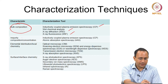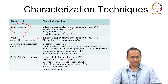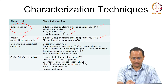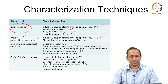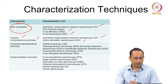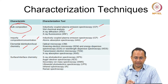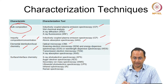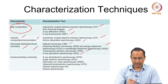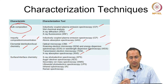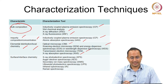Similarly, if you are interested in determining impurity composition and concentration, we can use ICP and atomic absorption spectroscopy. Elemental distribution and local chemistry can be determined using optical microscopy, scanning electron microscopy, transmission electron microscopy, and X-ray absorption spectroscopy. We will cover a few of these techniques in this course.